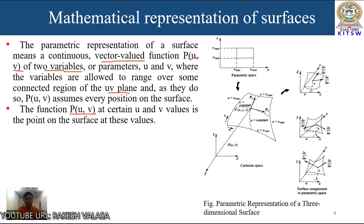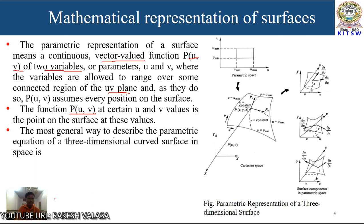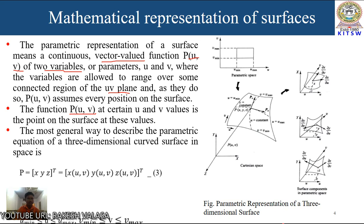In the parametric space, the minimum value is u-minimum and u-max. In the y direction, v-minimum and v-max. The most general way to describe the parametric equation of a three-dimensional curved surface in space is: P equal to [x, y, z] transpose equal to [x(u,v), y(u,v), z(u,v)] transpose. This is similar to the mathematical representation of parametric curves. The limits are u-min ≤ u ≤ u-max, and v-min ≤ v ≤ v-max.